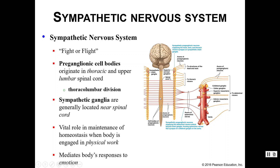We said that the preganglionic axon was actually pretty short, so it should make sense that the ganglia are going to be nearby. For example, we could talk about the aorta and its different branches — your inferior mesenteric artery, your superior mesenteric artery, all those good things. The postganglionic neurons — those axons — will have to go all the way to the target organs, so remember those can get really really long.